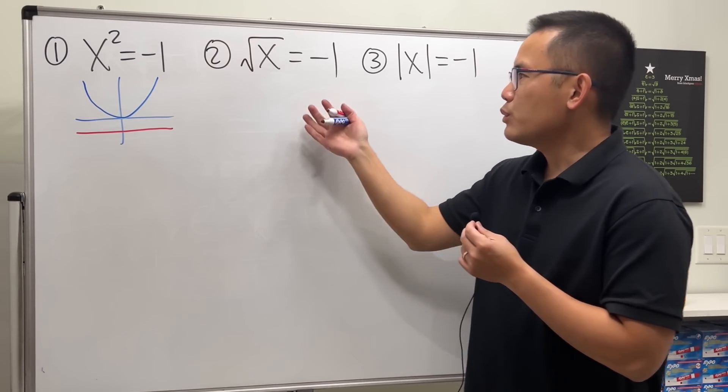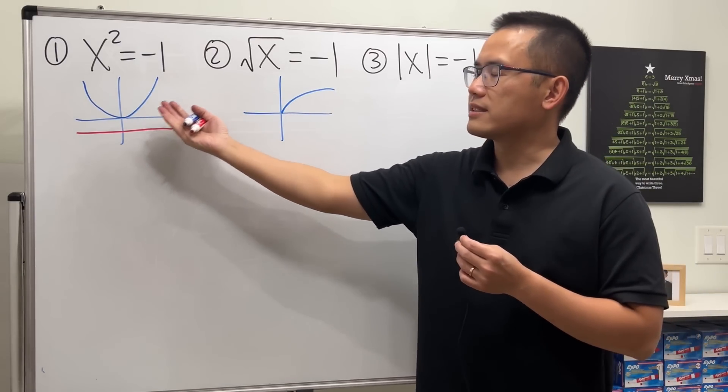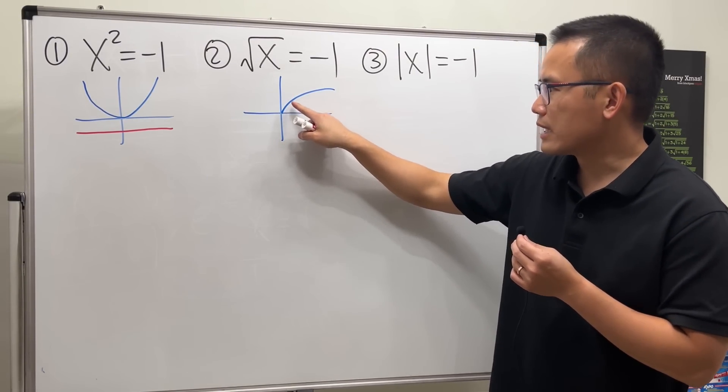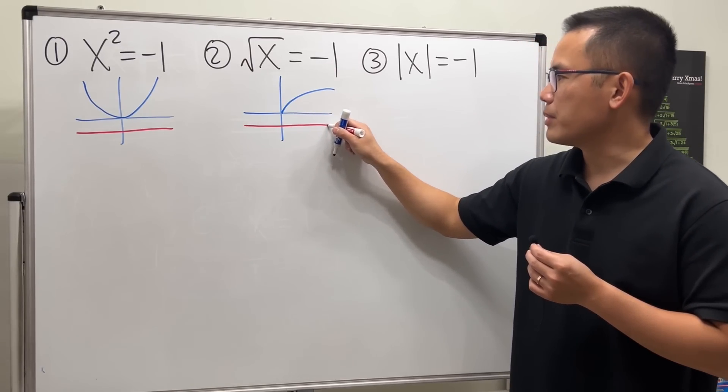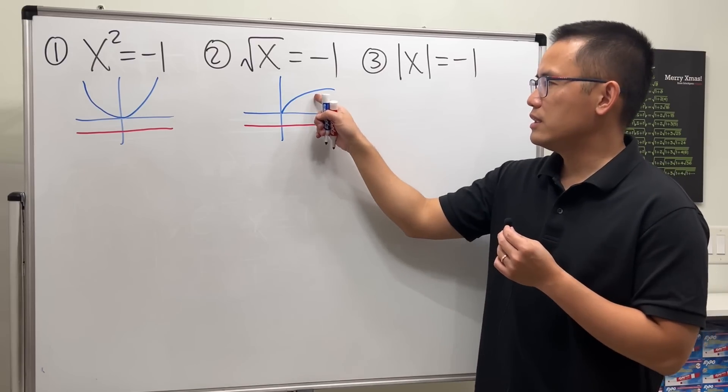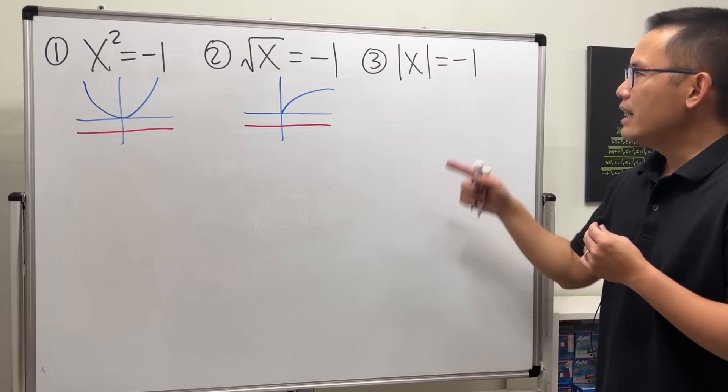Likewise for the next one, square root of x looks like this - it's just like the sideways parabola but just the top portion of it. And for negative one, once again it's down below here, so again this does not cross, so it seems there's no solution for this.